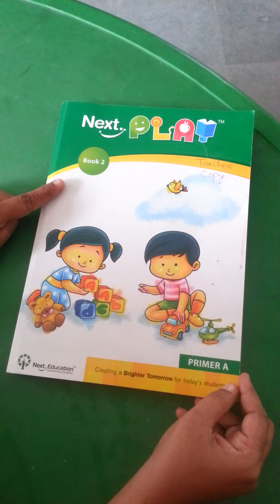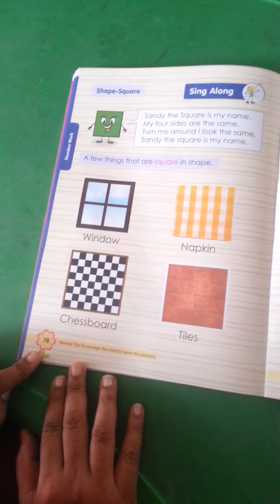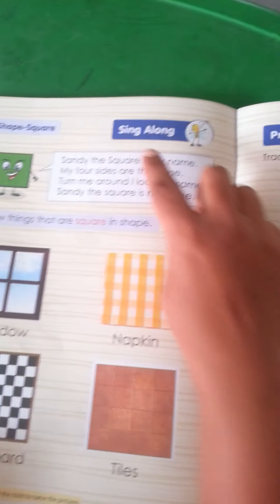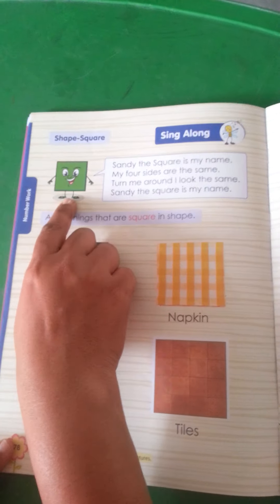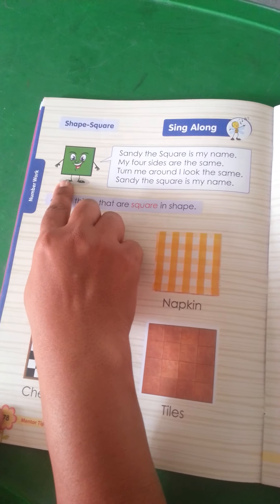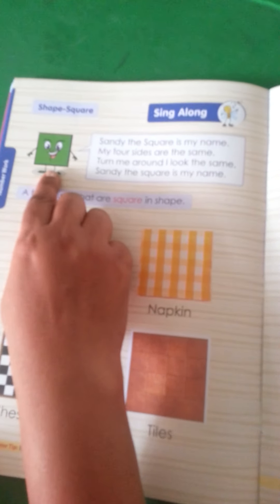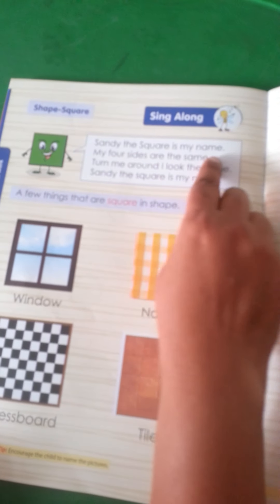So children, take your book number two and open the page number 78. Shape square. Sing along. Who is he? He is a square shape. Sandy the square is my name. Iska naam kya hai? Sandy the square.